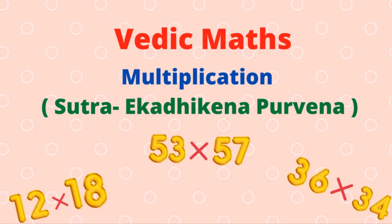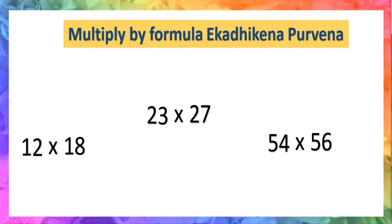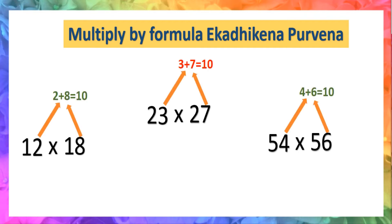In this video, you will learn how to do multiplication using Sutra Ekadhiken Purven. Two numbers can be easily multiplied with the help of this sutra. Ekadhiken Purven can be applied only when the sum of the last digits of both numbers is 10 or a power of 10, and the starting digit of both numbers is the same.